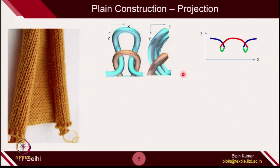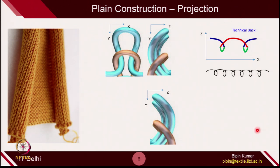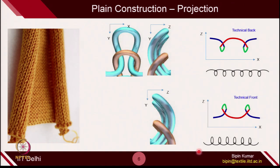This is very important. If you understand this, it will be very useful in the structural engineering of knitted structures, which is often ignored in many research articles. In the YZ plane, the yarn is bent like an arc. In the ZX plane, the nature of the loop projection is like this. This is basically the technical back side, because you are watching the fabric from the right side. If you flip the fabric and watch from the other side, the nature of projection will just be reversed — a mirror image about the horizontal axis, which is the technical front side projection.